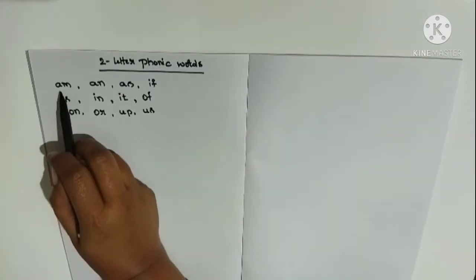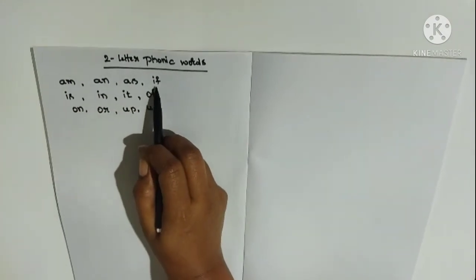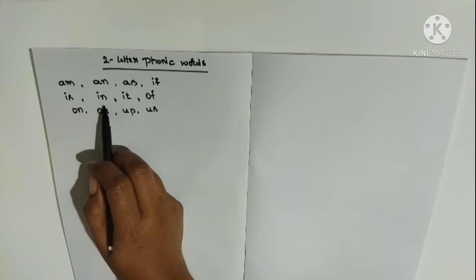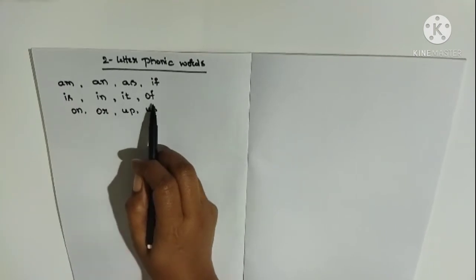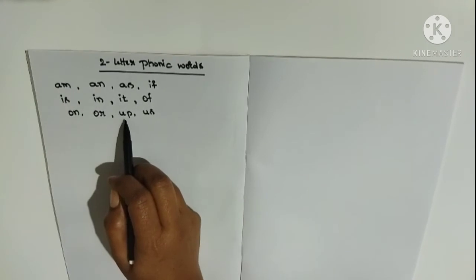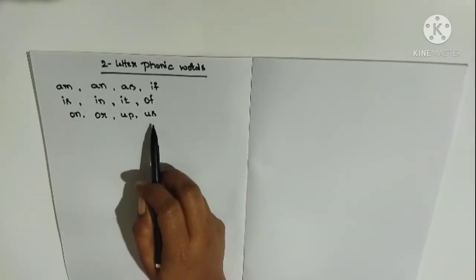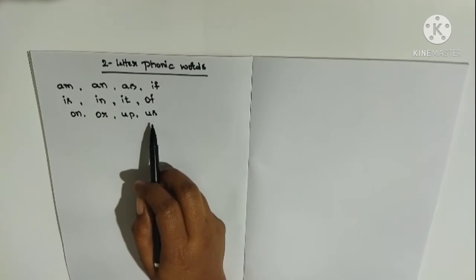One second, I will read it for you. Am, An, As, If, Is, In, It, Of, On, Are, Up and As. These are the two-letter phonic words that child has to learn in the first stage.